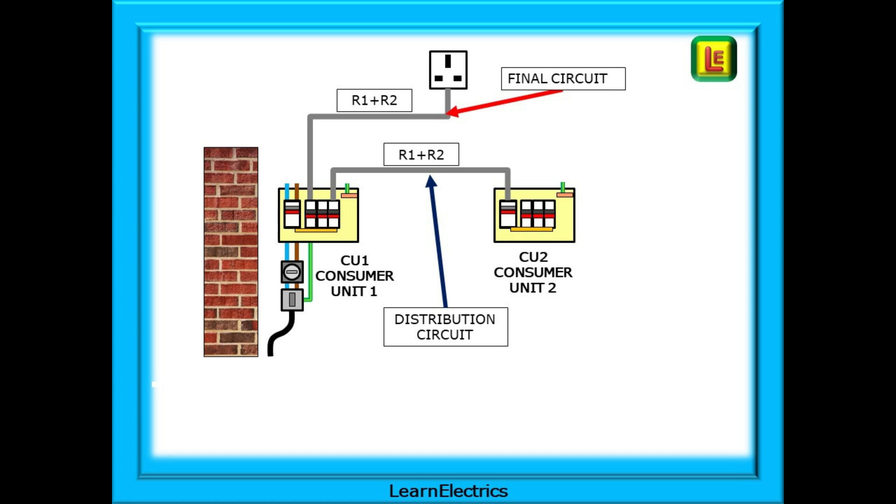On this slide we're showing a final circuit and a distribution circuit both coming from the same consumer unit and both with their own R1 plus R2. The distribution circuit is distributing electricity to another consumer unit and not to a point of use. A distribution circuit will have another set of fuses or circuit breakers to go through.